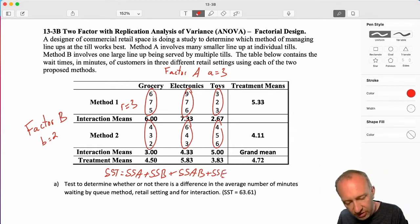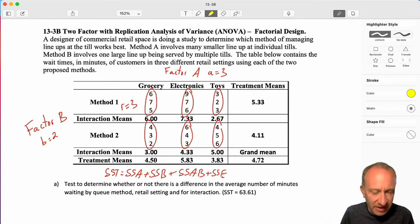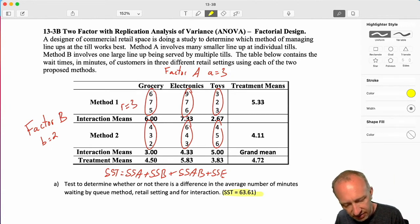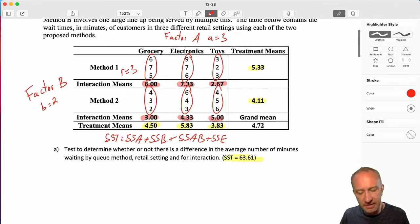And once more, just like in the randomized block, just like in the previous factorial, here I'm giving you SST, because, well, SST, you could actually calculate SST, but it would be extremely time-consuming. SSE, the math is beyond the prerequisites for this course. So I give you SST, and then you can fill in the rest. We have our treatment means along factor B, our treatment means along factor A, and our interaction means. So let's get into this.